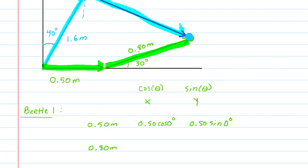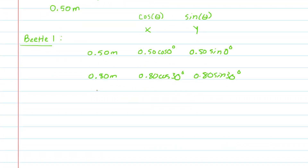Let's look at the next vector — the 0.8 meter in length vector. Take a look at the angle; you'll see that it's measured 30 degrees from the positive x-axis, so that will be our angle for that vector. You do 0.8 meters times the cosine of 30 degrees to get the x component, and then 0.8 meters times the sine of 30 degrees to get the y component. Then we want to find the total x and y components — the resultant.